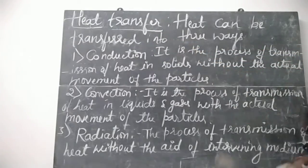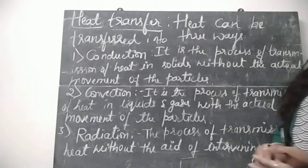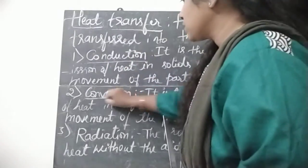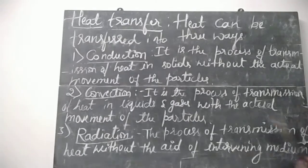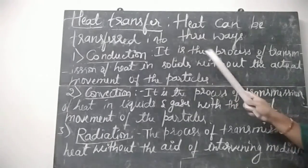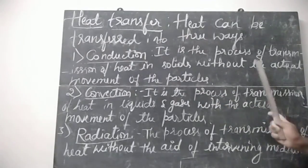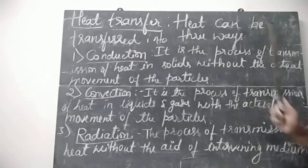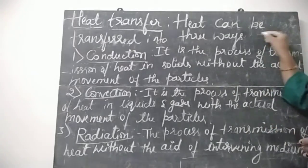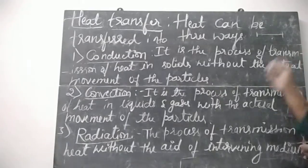Heat transfer means the process of transfer of heat from one place to another. There are three ways: conduction, convection, and radiation. Conduction is the process of transmission of heat in solids without the actual movement of the particles. There is a transfer of heat from one point to another without actual movement of the particles.